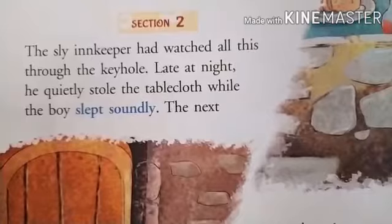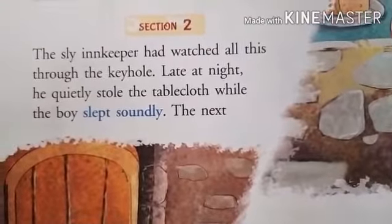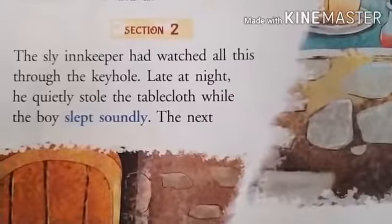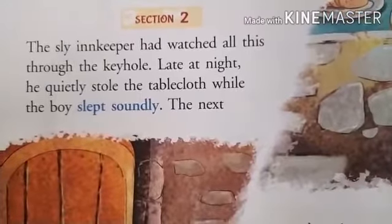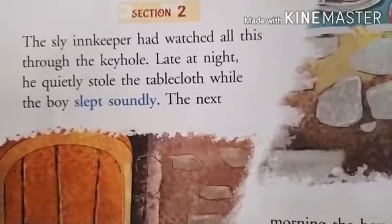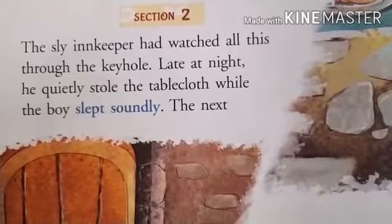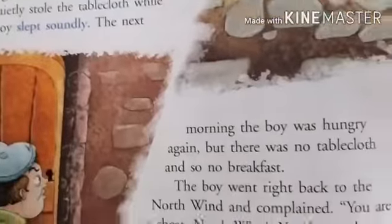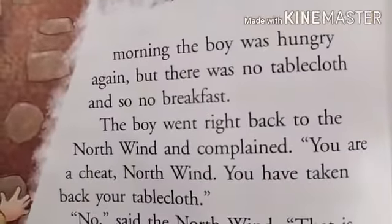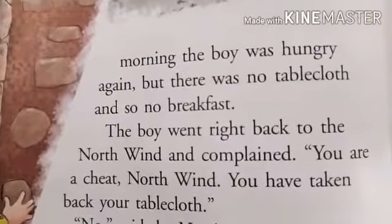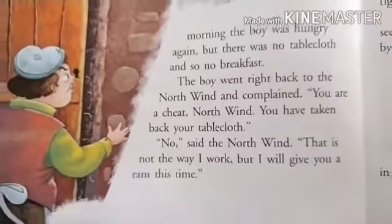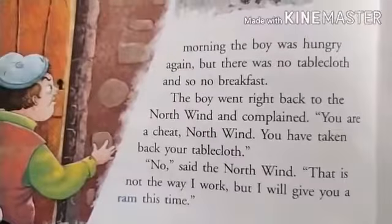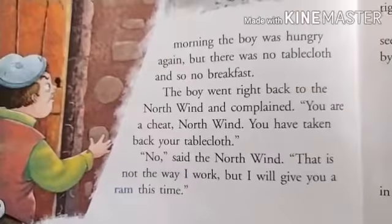Section 2. The sly innkeeper had watched all this through the keyhole — जो चालाक innkeeper था, hotel का मालिक, उसने सब कुछ door के keyhole से देखा। Late at night, he quietly stole the table cloth while the boy slept soundly — जब वो गहरी नींद में सो रहा था, तो innkeeper ने उसका table cloth धीरे से चुरा लिया। The next morning the boy was hungry again, but there was no table cloth and so no breakfast। The boy went right back to the North wind and complained — You are a cheat, North wind।